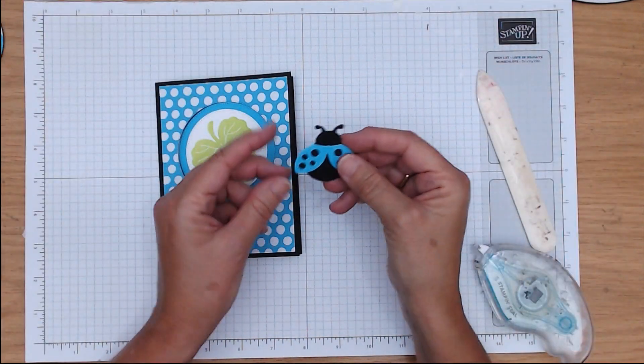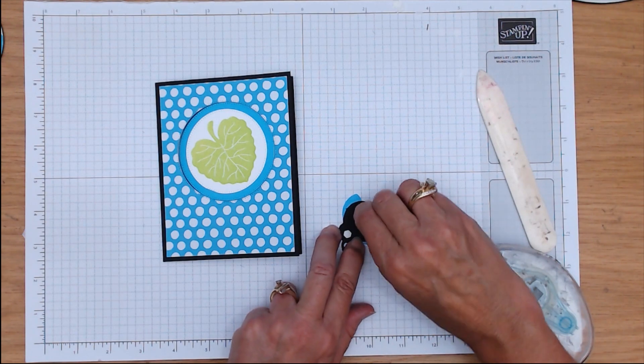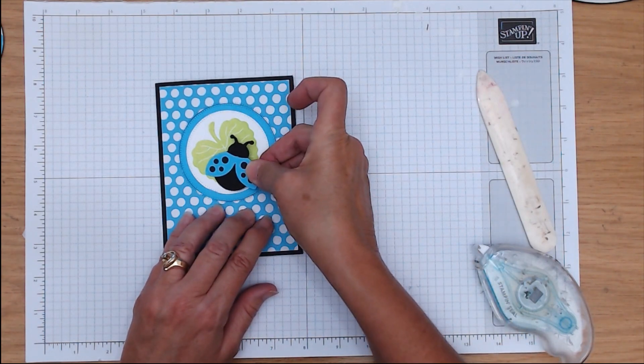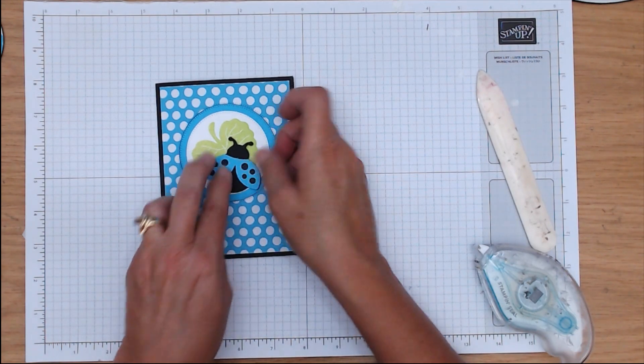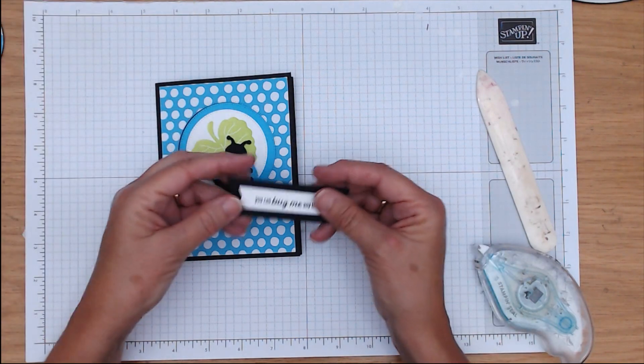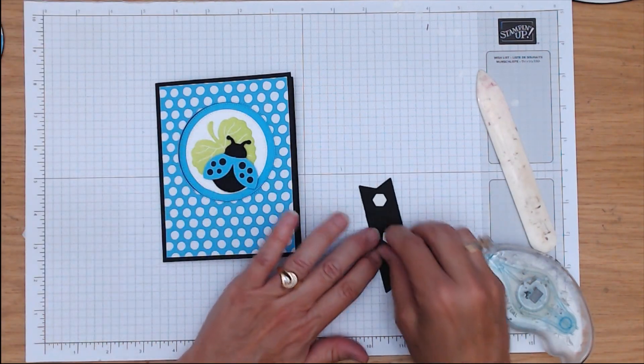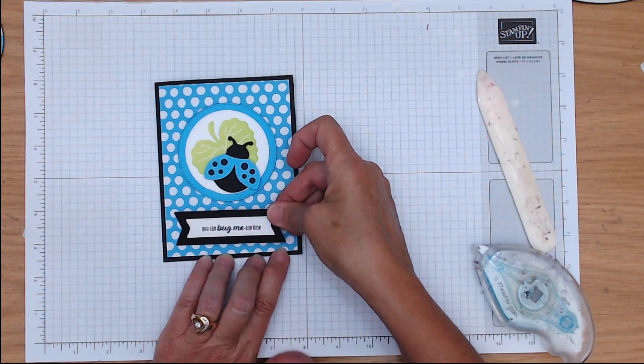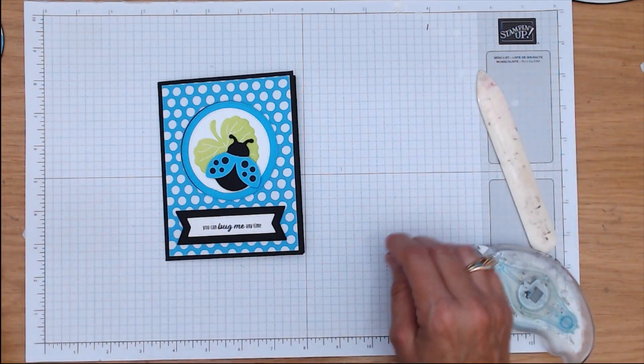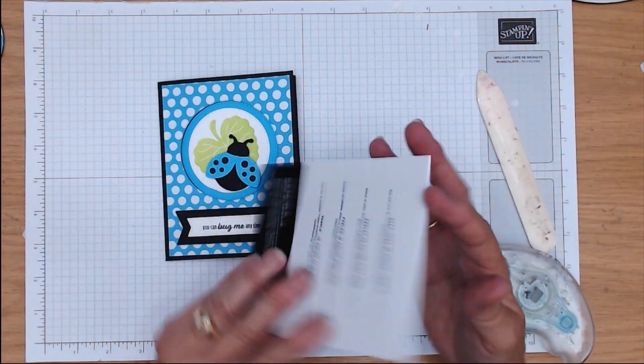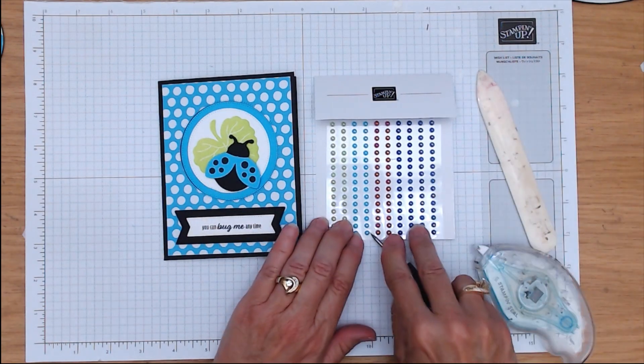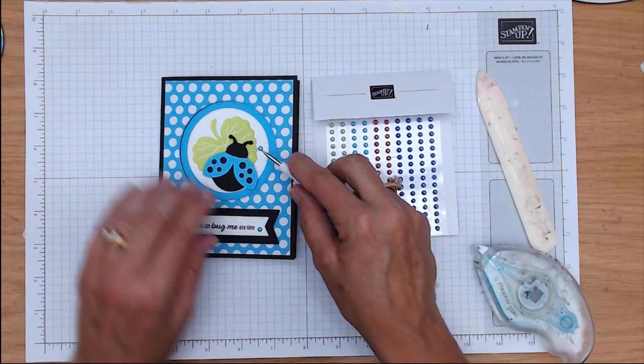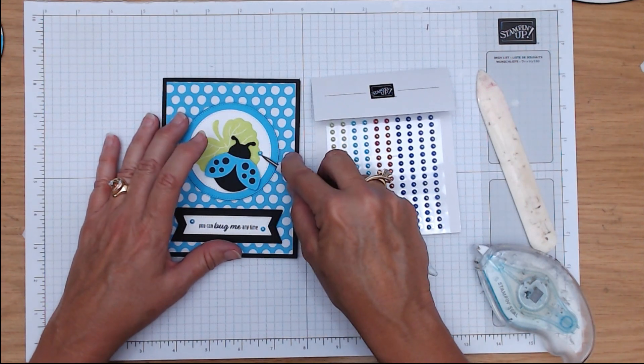And then I've already went ahead, stamped the wings, and punched out my little ladybug here. And that's going to go, we'll put that kind of to the side. You've got to stay within your circle, so that's good. Then I did the You Can Bug Me Anytime. Now that is from the Hello Ladybug set, and I used those Stylish Shapes banners and die cut my black, and the smaller is with the white.